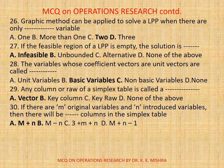Question 30. If there are M original variables and N introduced variables, then there will be Dash columns in the simplex table. The correct option is A, M plus N.